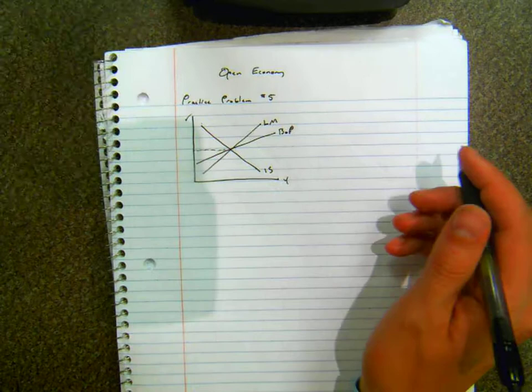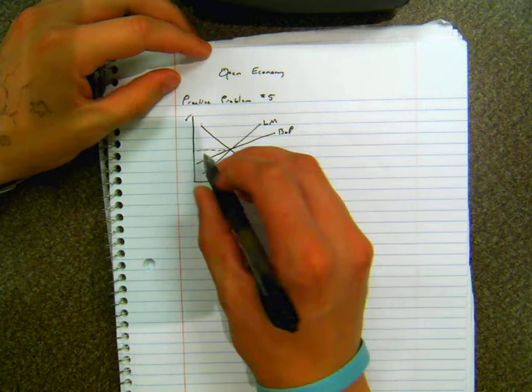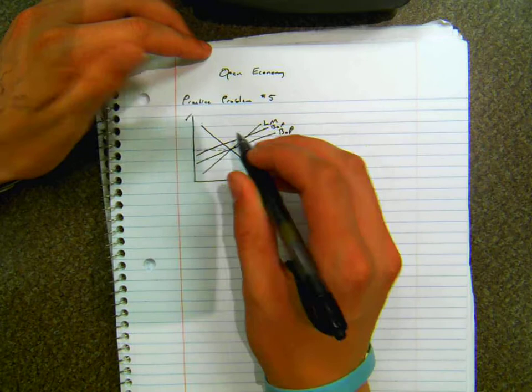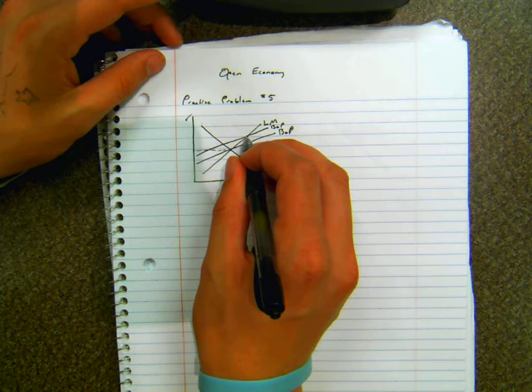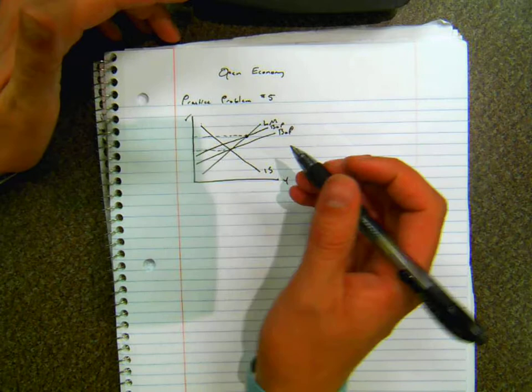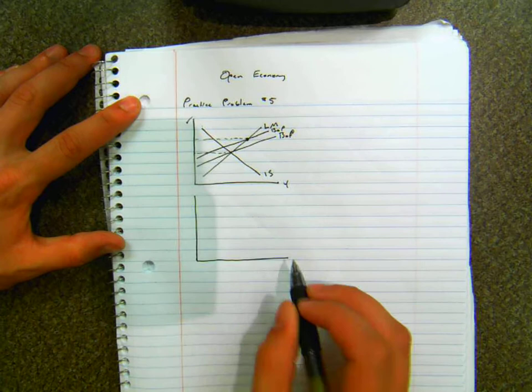So the first thing that happens is there's an increase in the foreign interest rate. Now what that does is it shifts the balance of payments back like so to a higher interest rate represented here. And the reason that it does this I'm going to show here on your foreign exchange graph.